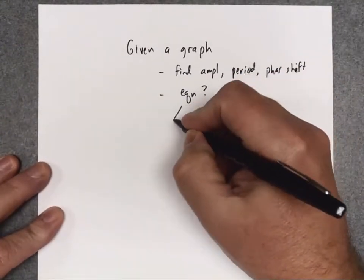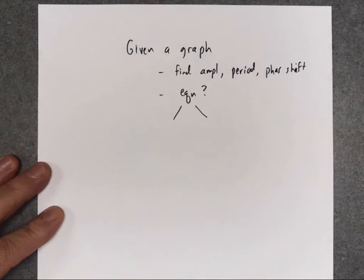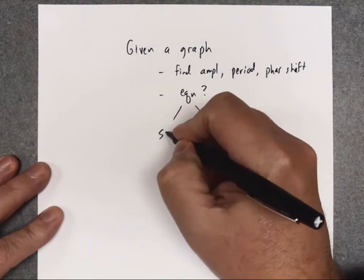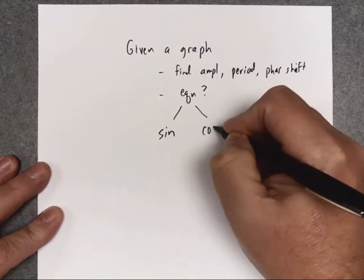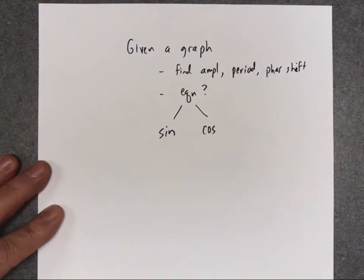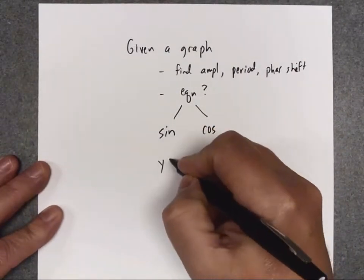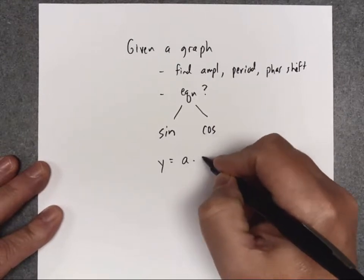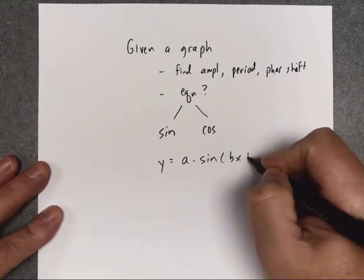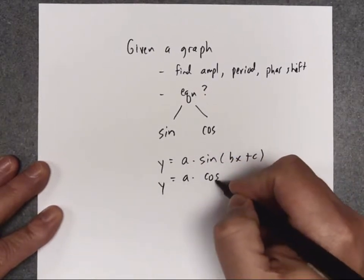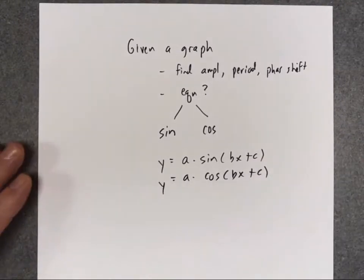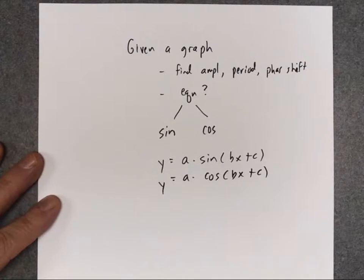When they give us a trig graph, they need to tell us from the start whether they want the equation to be a sine equation or a cosine equation. Remember the two standard forms: a sine equation is a times sine of bx plus c, or a cosine equation is a times cosine of bx plus c. Let's talk through our strategy for doing these kinds of problems — my goal is to do three examples.